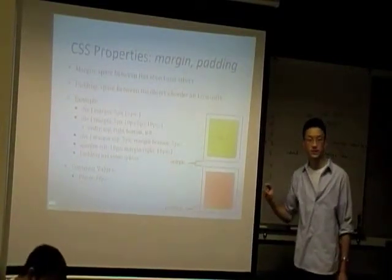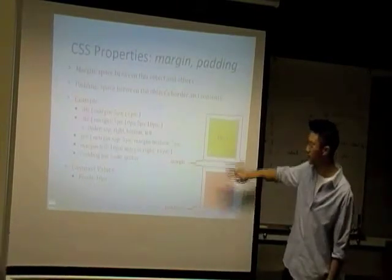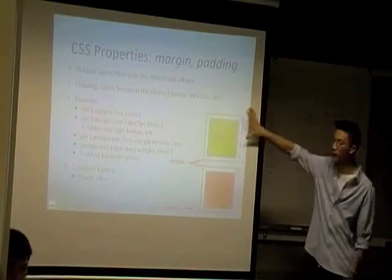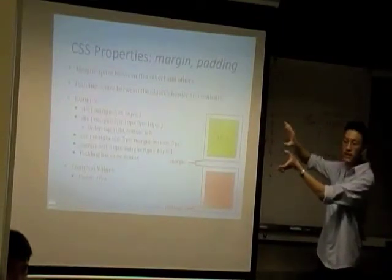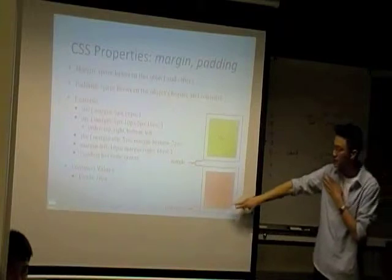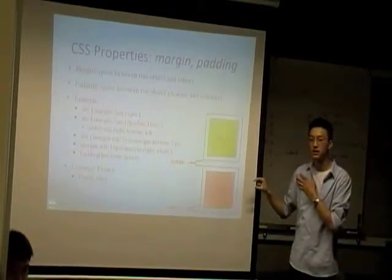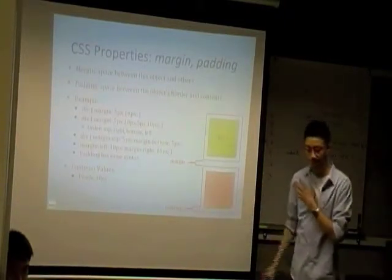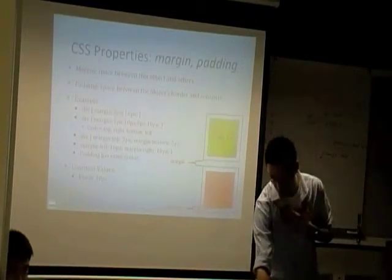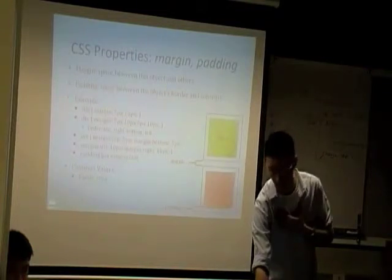Student: Can you repeat that? Instructor: The difference between margins and padding is that margins are the space between two elements - how close they can be together. Padding is the space between an element's border and its contents. And sorry if you guys haven't noticed, I'm feeling a little bit under the weather, so if you can't hear me or need me to repeat something, just let me know.